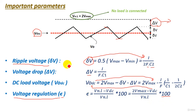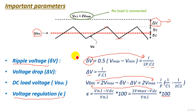These are the important parameters of our circuit. We now understand the operation of the voltage doubler circuit and how it can produce a doubled high voltage DC. Thank you and see you in the next lectures.